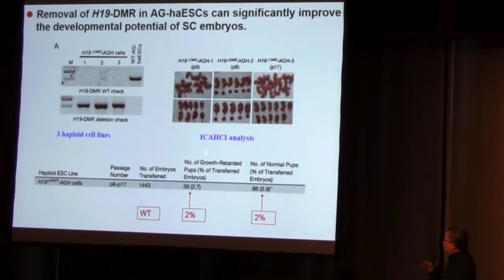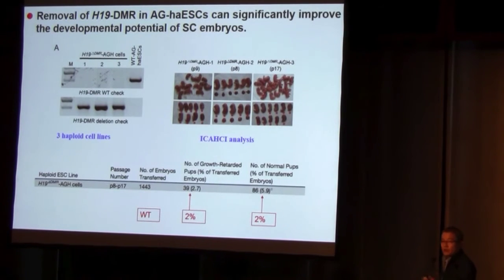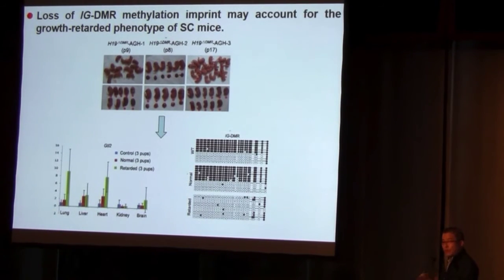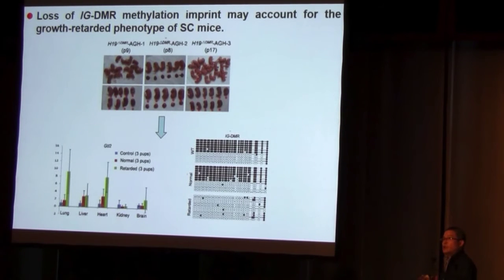Interestingly, we still found almost 3% of transferred embryos developed into growth-retarded pups, which means that besides the H19 effect, there are one or two more factors important for the growth-retarded phenotype of semi-cloned mice. So what is the next factor? Except H19, another very famous paternally imprinted gene is GTL2. We checked GTL2 expression in our haploid cells and in our growth-retarded pups. We found all growth-retarded pups showed GTL2 overexpression, and the IG-DMR region that controls GTL2 expression had lost DNA methylation.